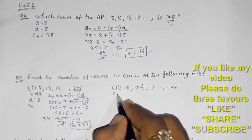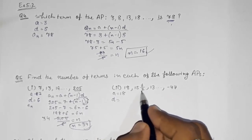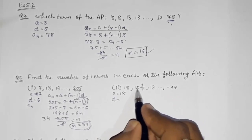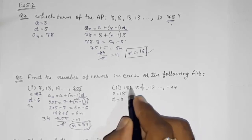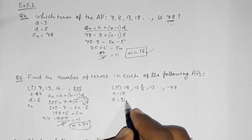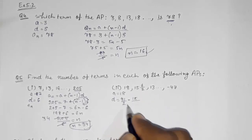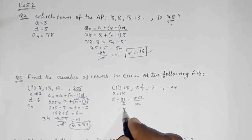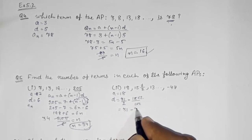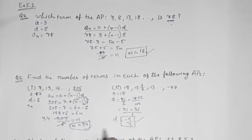Moving to the second AP in question 5: a = 18. Now here a problem arises in finding d. We compute a₂ − a₁, which is 31/2 − 36/2, giving us d = −5/2. Our common difference is −5/2.